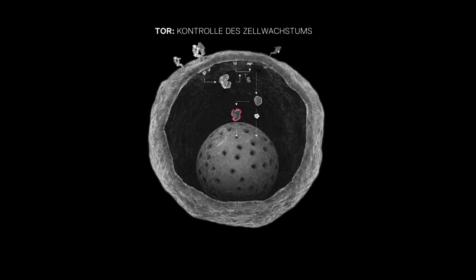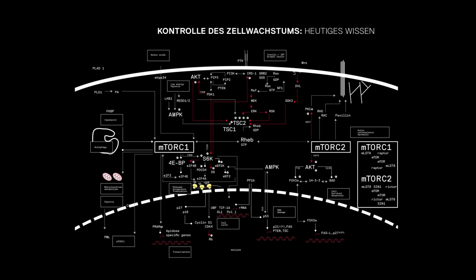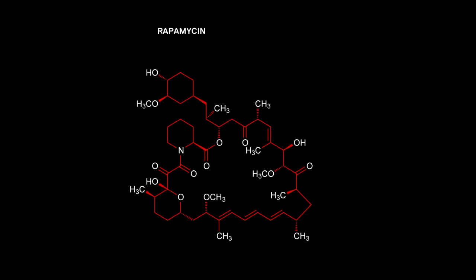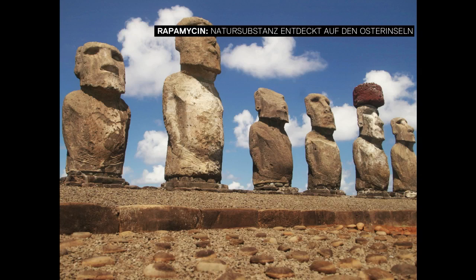Now, it's not quite this simple. We discovered TOR in 1991, and we and others have been working on this for over 20 years now, and the state of knowledge resembles something more like this. The word TOR — T-O-R — stands for target of rapamycin. And this is rapamycin; it's an organic molecule. This compound has a very interesting history because it's a natural molecule found in nature. It actually comes from a soil bacterium found in the soil of Easter Island, which is known by the locals as Rapa Nui, which is why this compound is called rapamycin.